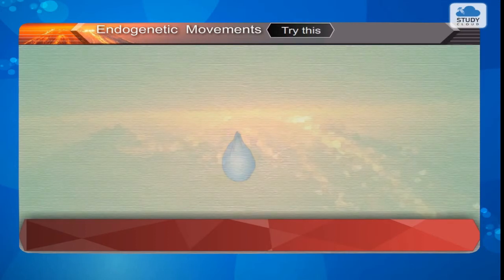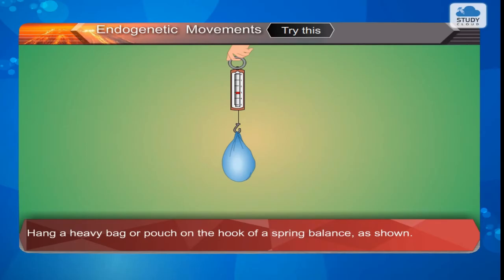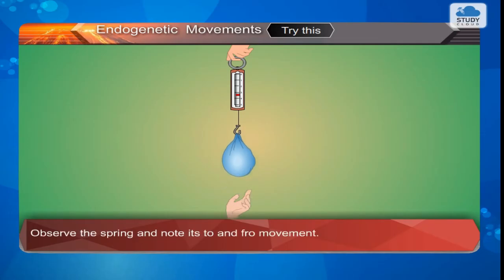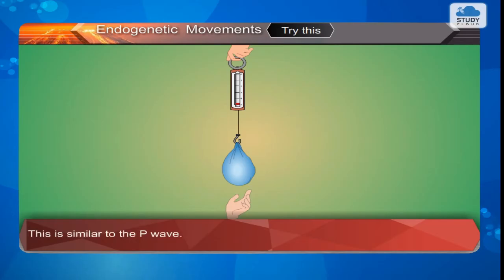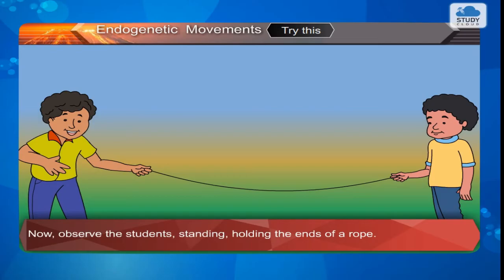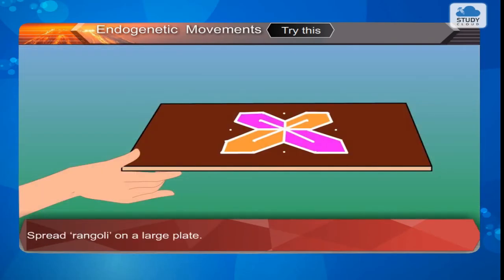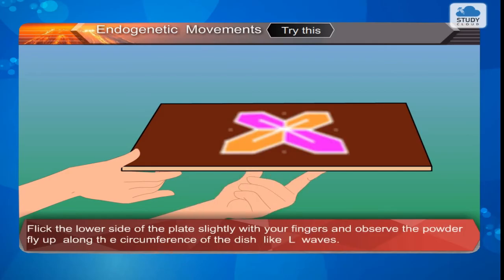Try this. Hang a heavy bag or pouch on the hook of a spring balance as shown. Pull the bag down and release it. Observe the spring and note its to and fro movement — this is similar to the P wave. Now, observe students standing holding the ends of a rope. If one student jerks the rope up and down, observe the formation of up and down waves like S waves. Spread rangoli on a large plate. Flick the lower side of the plate slightly with your fingers and observe the powder fly up along the circumference of the dish — like L waves.